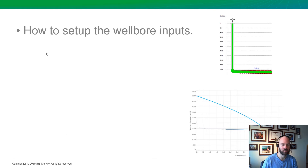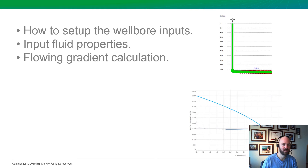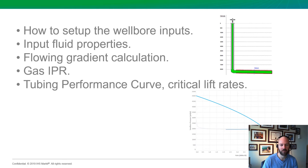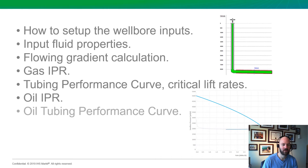For today's agenda, we're going to start with a brand new blank Harmony project file. We'll get some basic wellbore inputs entered, input our fluid properties, and the first calculation we're going to do is called a flowing gradient calculation — figuring out what our bottom hole flowing pressure is. Then we're going to create a gas inflow performance relationship curve, an outflow or tubing performance curve, and look at liquid loading: is the well liquid loaded, when will it liquid load, and what can we do to fix that? Then we're going to create an oil IPR and an oil tubing performance curve, plus a little bonus at the end.